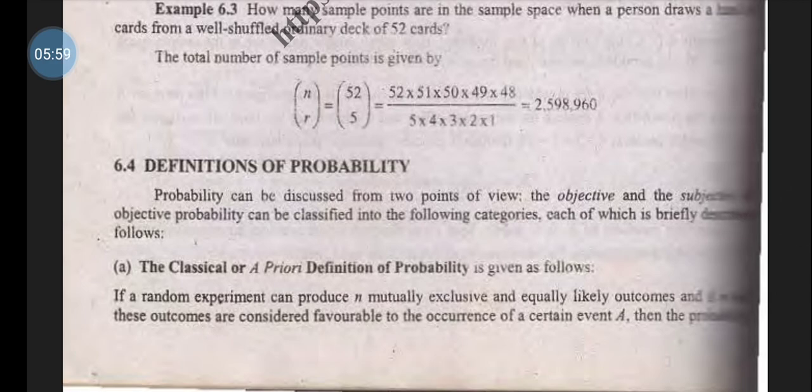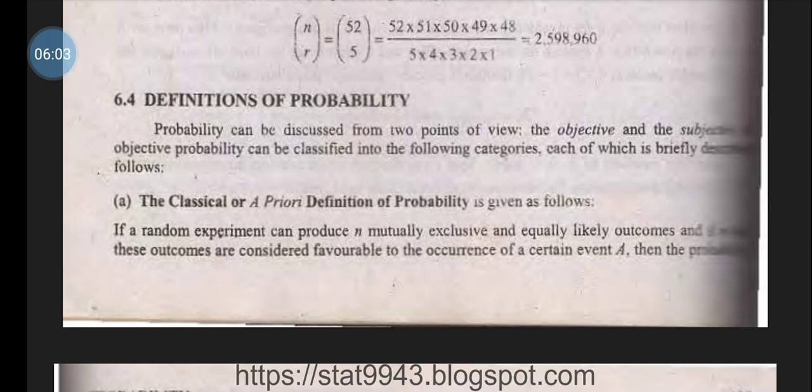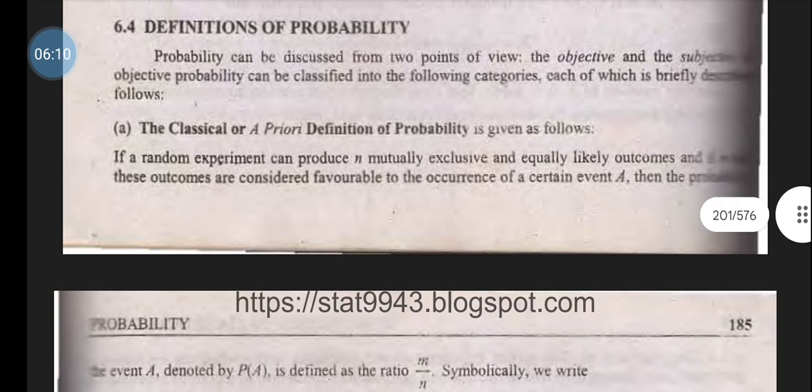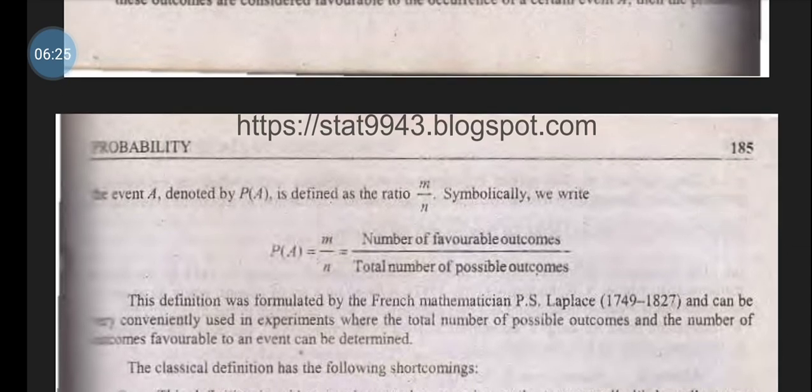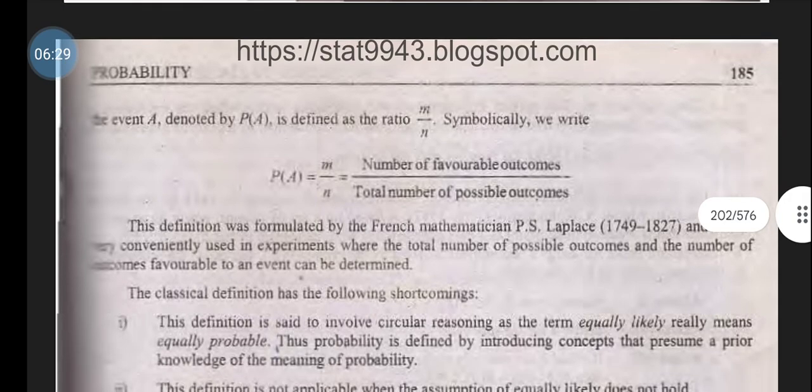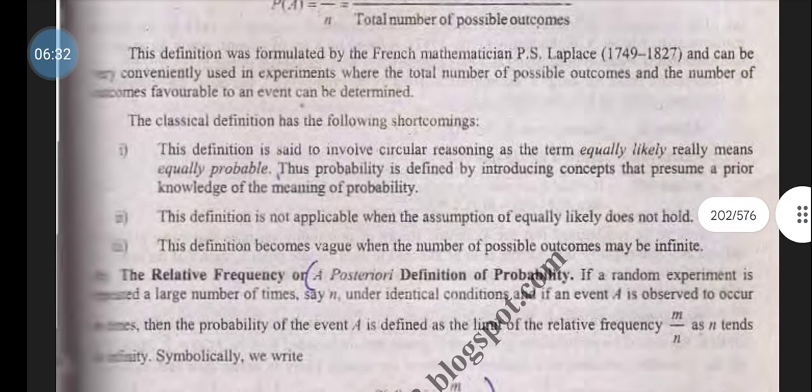Definitions of probability can be discussed from two points of view: objective and subjective. The classical or a priori definition states that in a random experiment that can produce n mutually exclusive and equally likely outcomes, where m of these outcomes are considered favorable to the occurrence of event A, then P(A) equals m/n, which is the number of favorable outcomes over total number of possible outcomes. This classical definition has the following shortcomings: it involves circular reasoning because 'equally likely' means equal probability, so probability is defined by introducing a concept that presumes prior knowledge of probability.